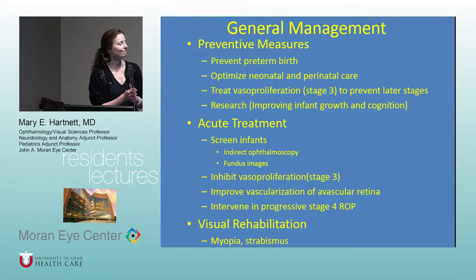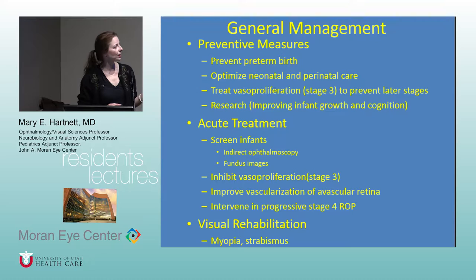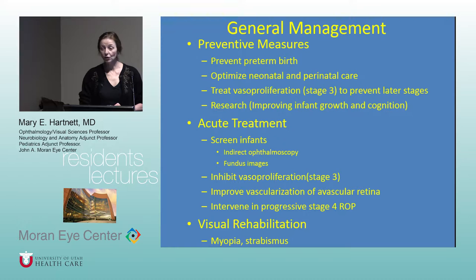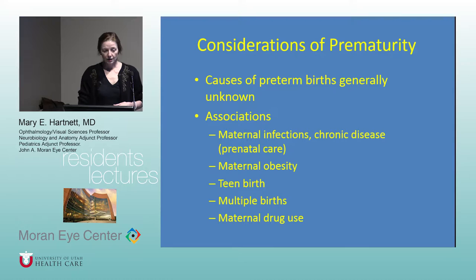Acute treatment involves screening infants with indirect ophthalmoscopy or fundus images. We want to inhibit vasoproliferation, improve vascularization of the avascular retina, and intervene at the right time point in progressive stage 4 ROP. Visual rehabilitation involves treating what's more common in premature infants with severe ROP: myopia and strabismus.